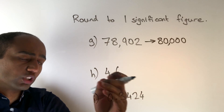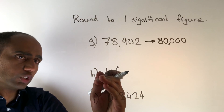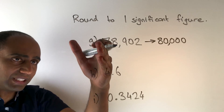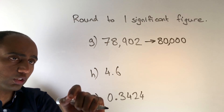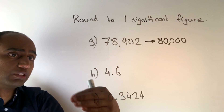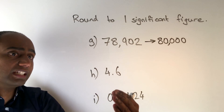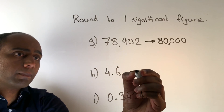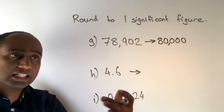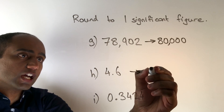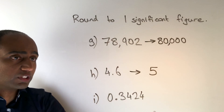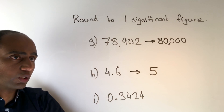In H we've now got a decimal — we've got 4.6. The biggest place value column is the units column, so we need to round this to the nearest unit or the nearest whole number. The nearest whole number in this case is five; 4.6 rounds up to five.